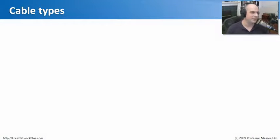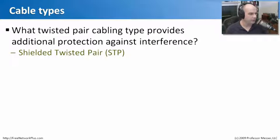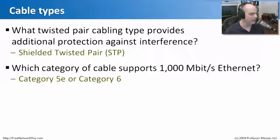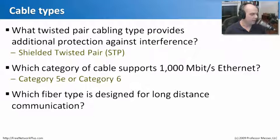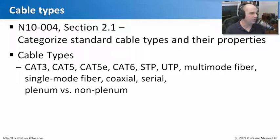Let's see how much we remember about cable types. What twisted pair cabling type provides additional protection against interference? That would be shielded twisted pair — you'll hear it referred to as STP. Which category of cable supports 1,000 megabit Ethernet? That's a bit of a trick question: 1,000 megabit Ethernet is the same as 1 gigabit Ethernet, and the categories that support it are Category 5e or Category 6. Which fiber type is designed for long distance communication? That would be single-mode fiber — the one you see most whenever you need to go over 10, 15, or 20 kilometers.